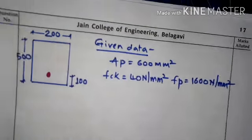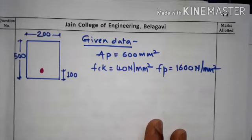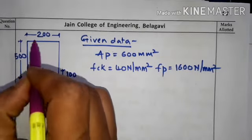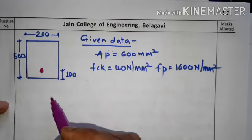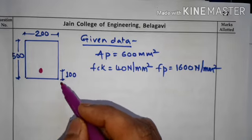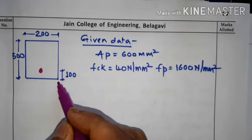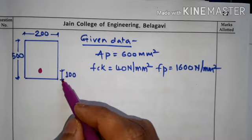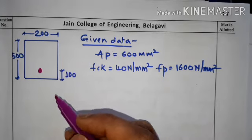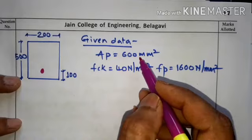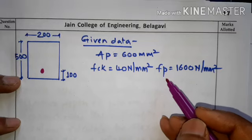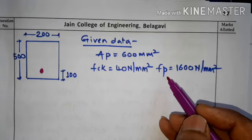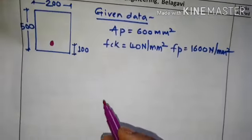According to the given data, the beam is 200 mm by 500 mm deep and the steel is located at 100 mm from the soffit, which is the bottom of the beam. Area of steel AP = 600 mm², FCK = 40 N/mm², and FP = 1600 N/mm².